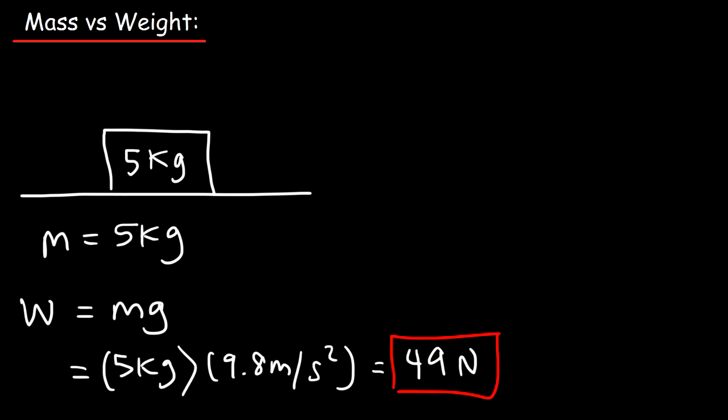Another way in which you can illustrate this is if you take that object and put it on the Moon. On the Earth, the block has a mass of 5 kg. On the Moon, it still has a mass of 5 kg.